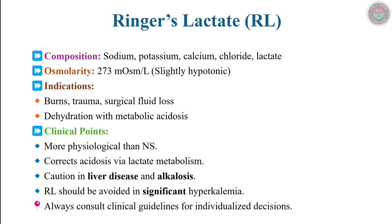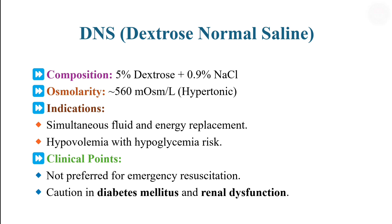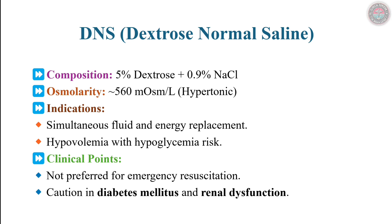Dextrose normal saline combines 5% dextrose with 0.9% NaCl, yielding a hypertonic solution. It provides calories and volume, but is unsuitable for resuscitation due to hyperglycemia risks. Use cautiously in diabetes or renal dysfunction. Its role is limited to maintenance in stable patients with hypoglycemia risk or caloric needs.